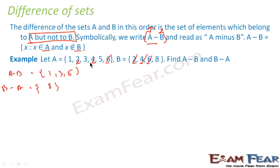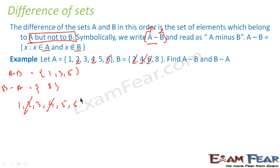For A minus B, first write all the elements in A: 1, 2, 3, 4, 5, 6. The elements which are also in B we subtract — 2 is in B, subtract; 4 is in B, subtract; 6 is in B, subtract. So what we get is 1, 3, 5. This is A minus B.